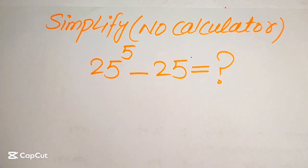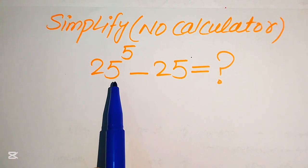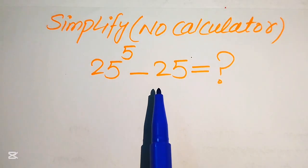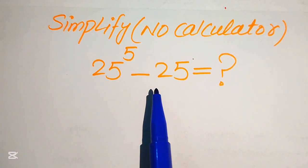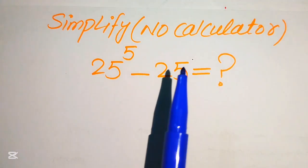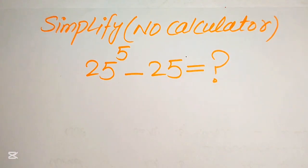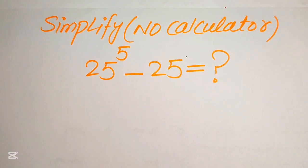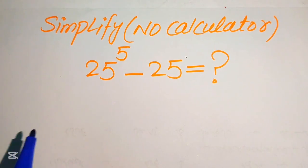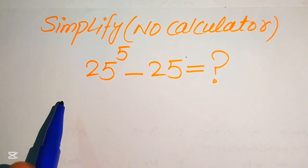Hello everyone. How to simplify this nice algebraic expression: 25 to the power of 5 minus 25. We write this algebraic expression into simplified form. Remember, a calculator is not allowed in this problem — we will do all of the working on paper or in our mind. I hope you like this method, and if you have any other method, please write it in the comment section.